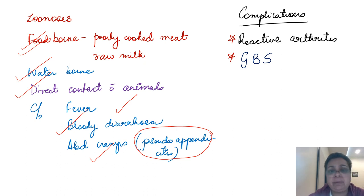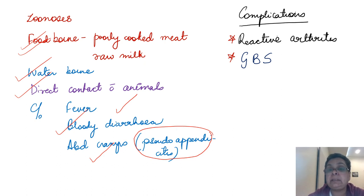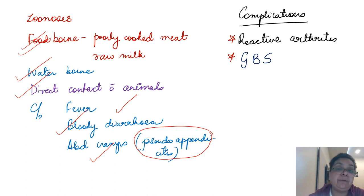We generally don't need to give antibiotics for campylobacteriosis because it generally resolves. But if the disease is very severe or persists for more than a week, we give antibiotics in the form of macrolides.